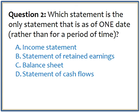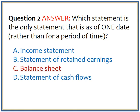The second question: which statement is the only statement that is as of one date, rather than for a period of time? The answer choices are income statement, statement of retained earnings, balance sheet, or statement of cash flows. The answer is the balance sheet. The income statement, statement of retained earnings, and statement of cash flows all cover a period of time and have a date line that begins 'for period ending.'